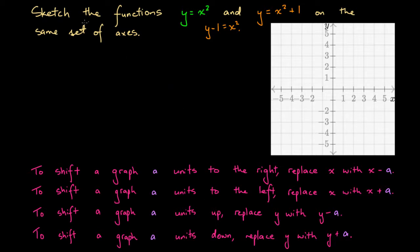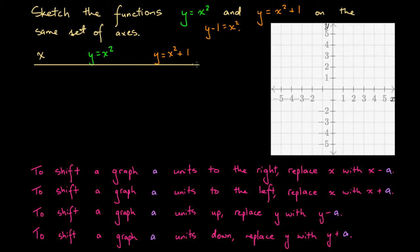To confirm this, we're going to sketch both functions on the same set of axes by drawing up a table of values. We'll list x values and compute y values for both y equals x squared and y equals x squared plus 1. The x values we'll consider are minus 2, minus 1, 0, 1, and 2.